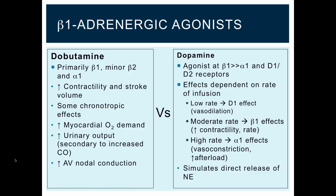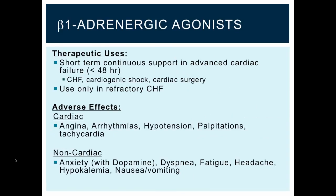Both of these agents are direct-acting sympathomimetics, meaning they directly interact with the receptor and increase its activity. Therapeutically, the beta-1 adrenergic agonists are used for short-term continuous support in advanced cardiac failure, congestive heart failure, cardiogenic shock, and cardiac surgery, and they are only used in refractory congestive heart failure. Adverse effects include cardiac events such as angina, arrhythmias, hypotension, palpitations, and tachycardia, as well as non-cardiac effects such as anxiety, dyspepsia, fatigue, headache, hypokalemia, and nausea and vomiting.